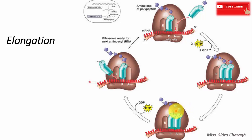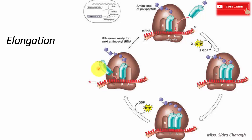Next, the ribosome moves along the messenger RNA one codon, shifting the transfer RNA that was attached to methionine to the E site. The empty transfer RNA is released from the E site back into the cytoplasm, where it is ready to pick up another amino acid to build another polypeptide chain.